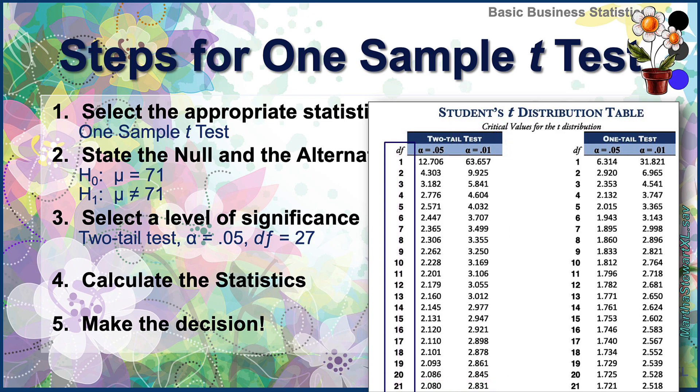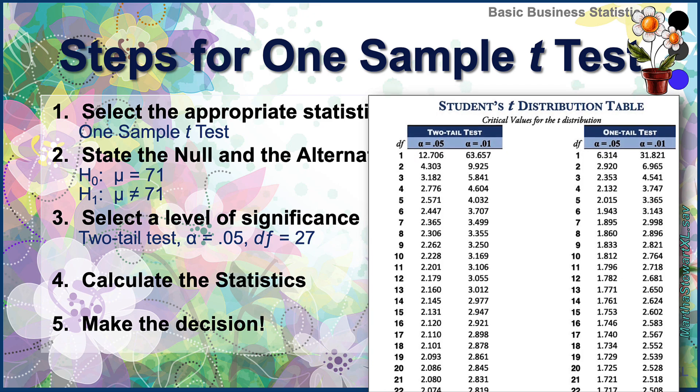Running down the column under the df, we see numbers one, two, three. These are the degrees of freedom. And we have 27 degrees of freedom. So we're going to need to scroll down this table.